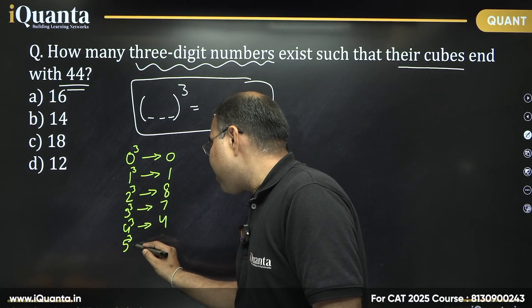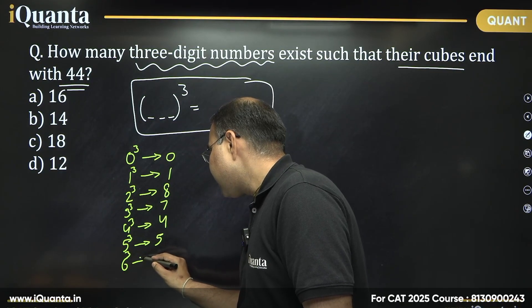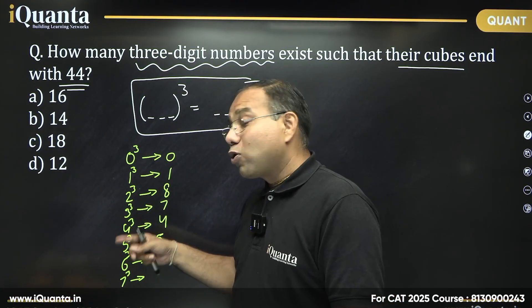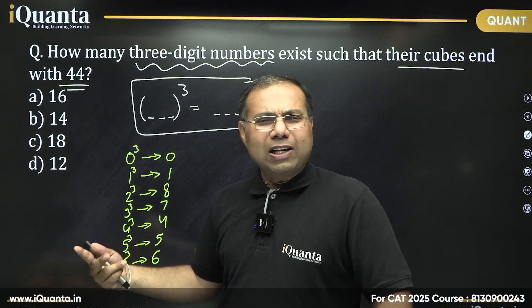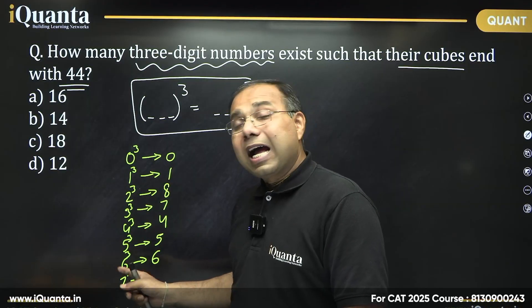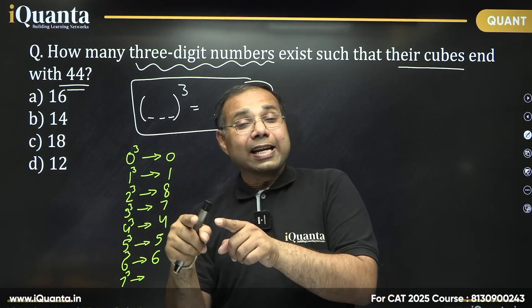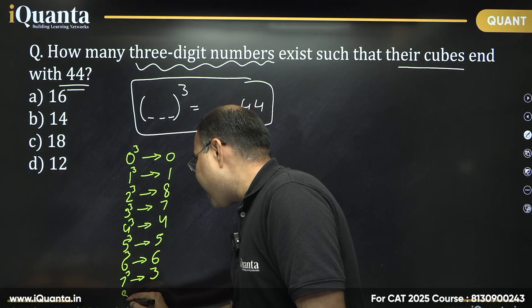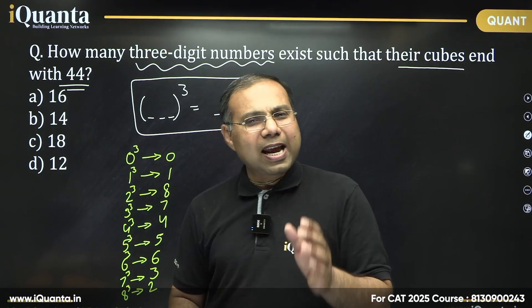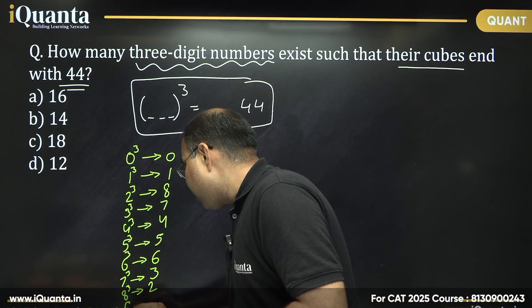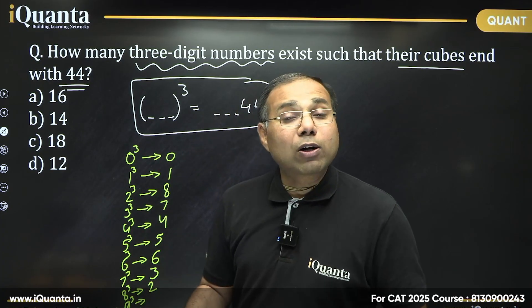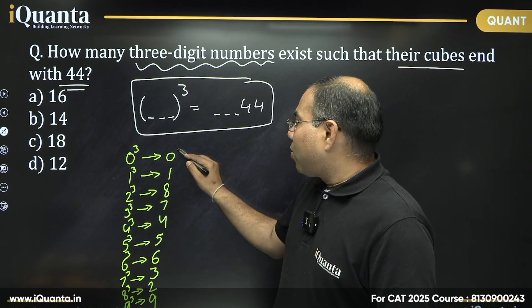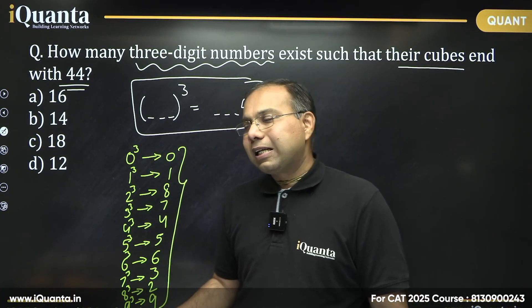5 cubed ends in 5, and 6 cubed ends in 6 — for example, 6³ = 216, ending in 6; 5³ = 125, ending in 5. For 7: 7×7 ends in 9, and 9×7 ends in 3, so 7 cubed always ends in 3. 8 cubed always ends in 2. And 9 cubed always ends in 9. So looking at the pattern, all 10 digits (0–9) appear as unit digits of cubes and they do not repeat.